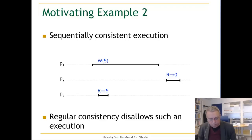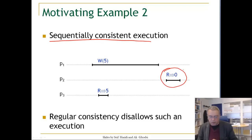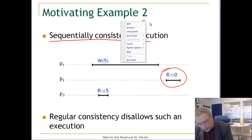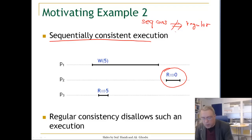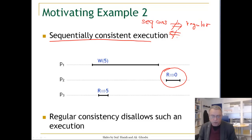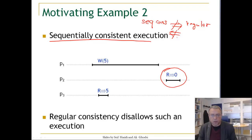Here is a sequentially consistent execution that is not a regular execution, because in a regular execution this is not allowed. The only possible value of this read, in this case, should be five — the last value written. This gives us an example where a sequentially consistent execution does not imply a regular execution. We have also seen a regular execution that is not a sequentially consistent execution. So what we conclude is that regular executions and sequentially consistent executions are incomparable.